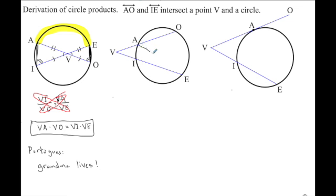So if I do draw in this line segment and this line segment, I might notice that this angle right here, it terminates at A and I.